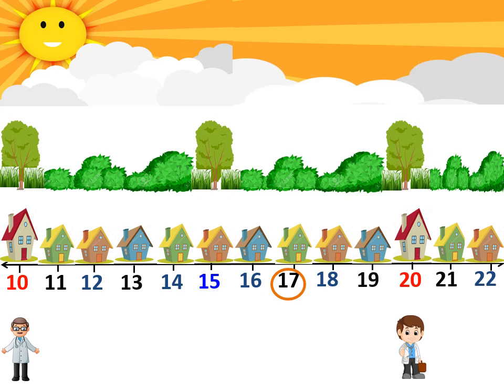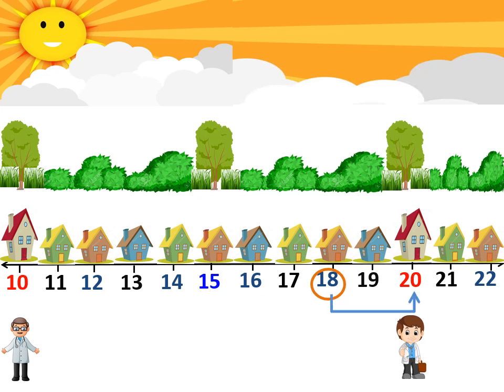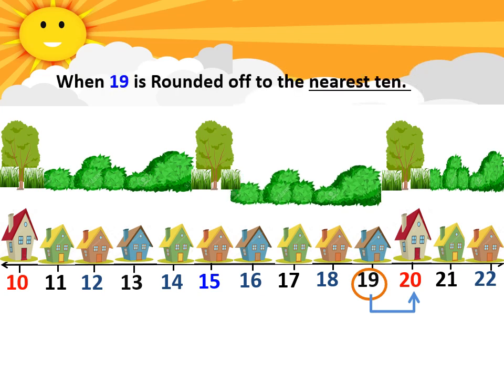Similarly, the teenager in house number 17, in case of a medical emergency, rushes to the nearest doctor — it is undoubtedly Dr. Sam residing in house 20. Similarly, the doctor's house closest to house number 18 is number 20. The same story continues for house 19 — they will also head to house 20, as Dr. Sam is nearest to them. By now, we get an idea that rounding off numbers is a kind of estimation. Therefore, when 19 is rounded off to the nearest 10, it becomes 20.